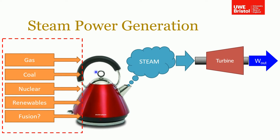Essentially, 80% to 90% of the UK's energy is generated by generating steam which we pass through a steam turbine to produce electricity. That's what I covered in one of my other lectures where we looked at the Rankine cycle associated with it.